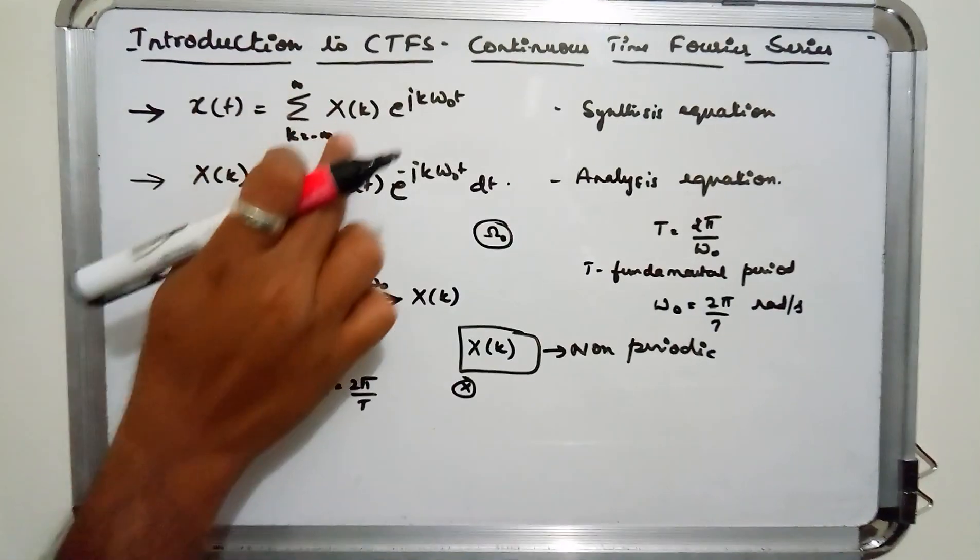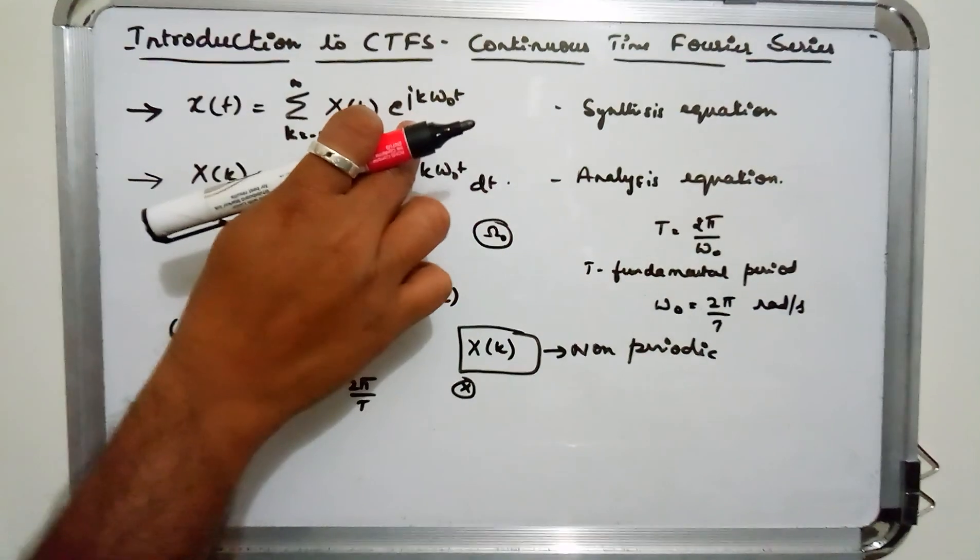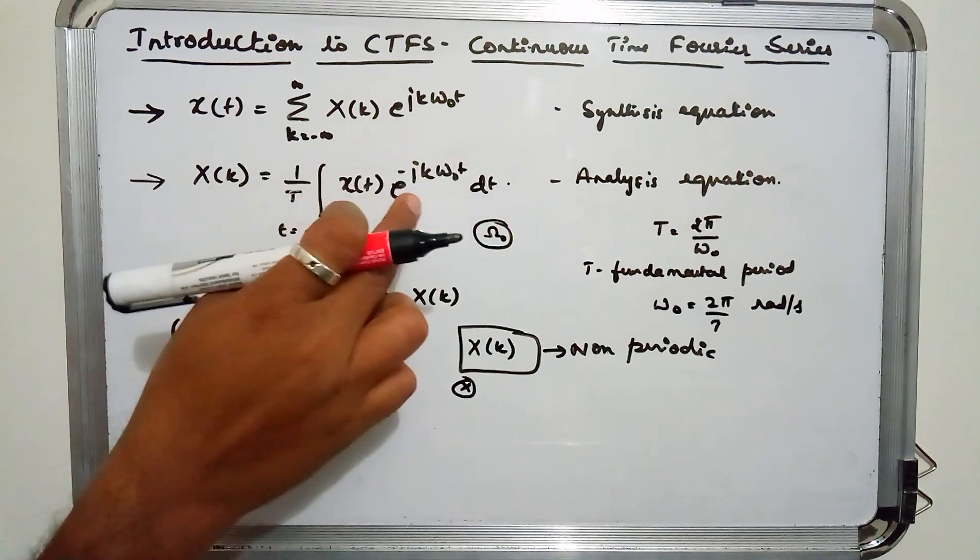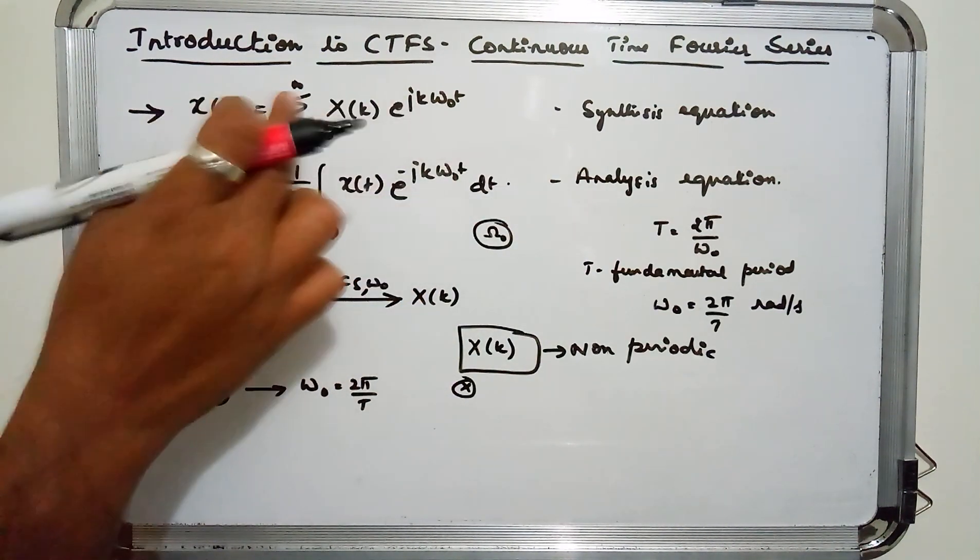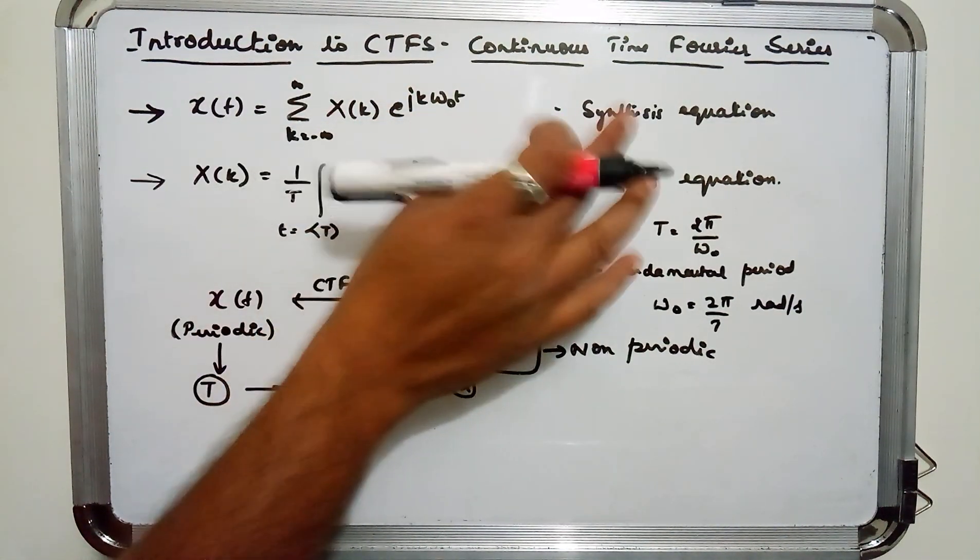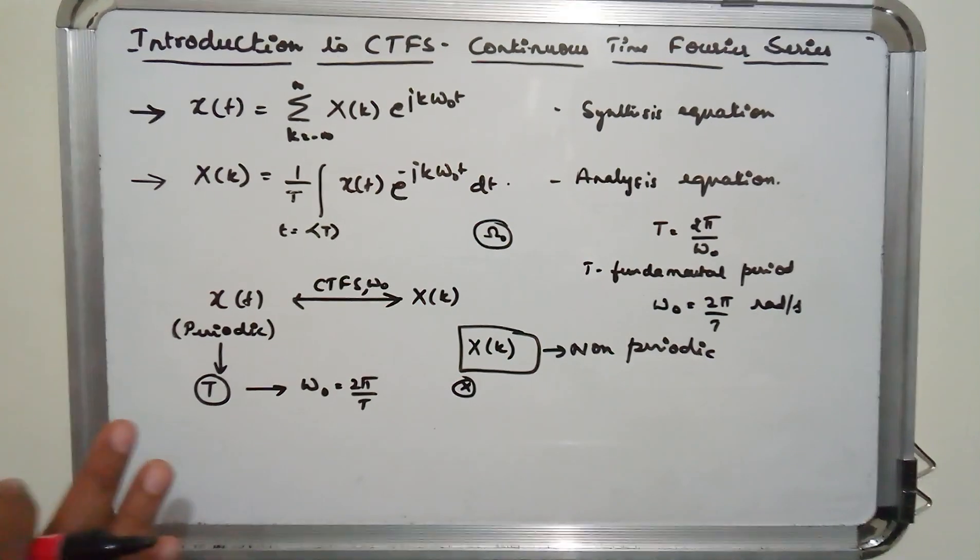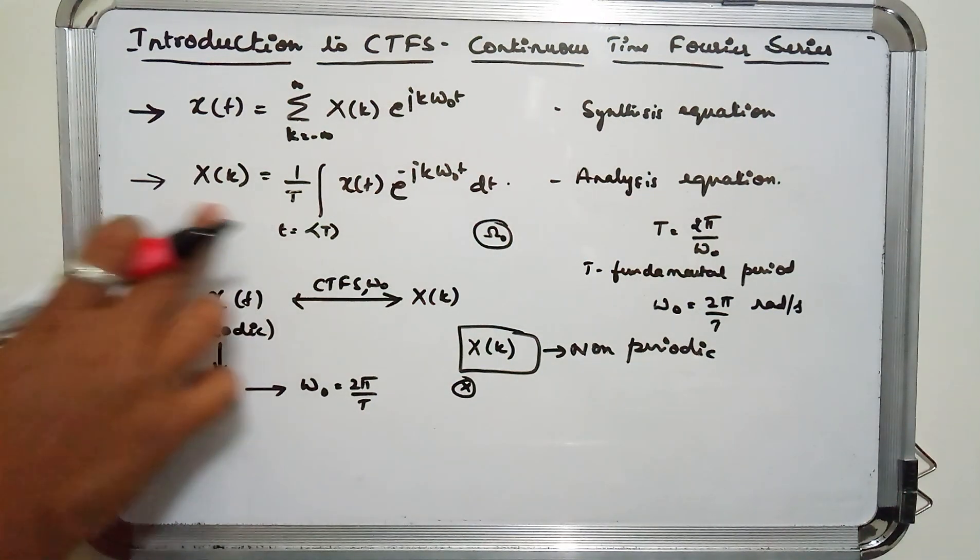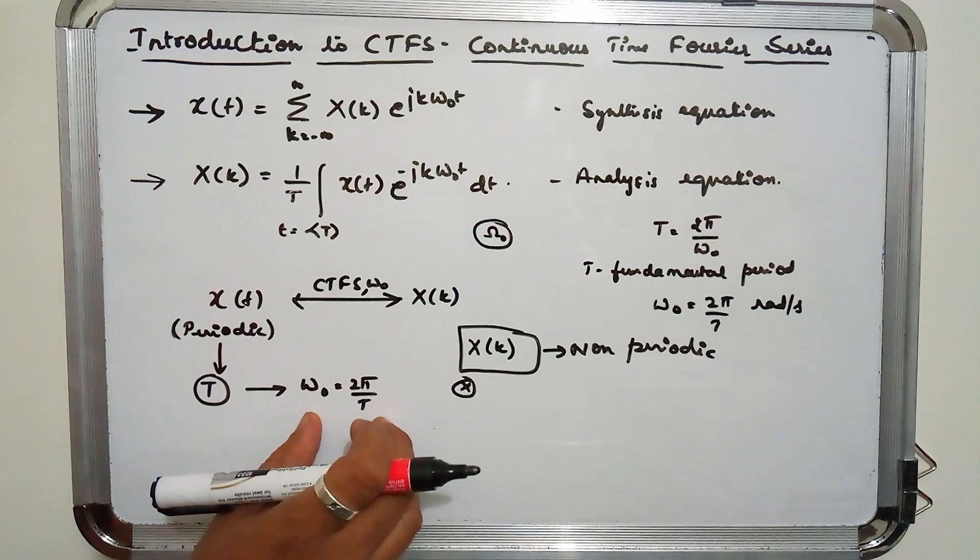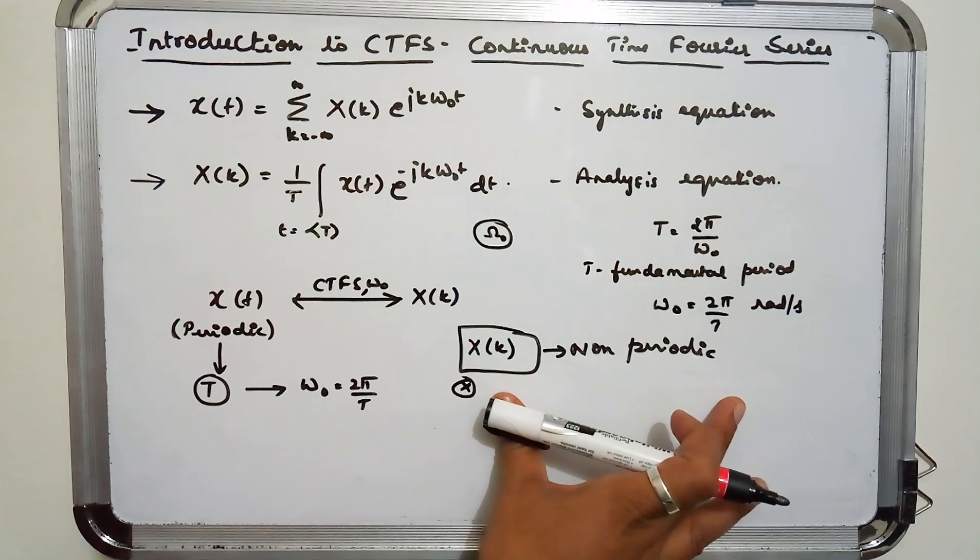So if you sum up X(k) coefficients from minus infinity to plus infinity and if you multiply with the complex conjugate of the previous exponential multiplier for CTFS calculation, then you get back your original signal X(t), and that equation is called synthesis equation. So the things to be remembered here is the CTFS equation, the fundamental period, the angular frequency, and you also have to know that X(k) is non-periodic.